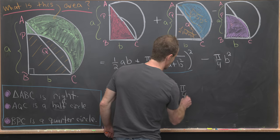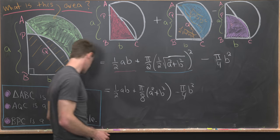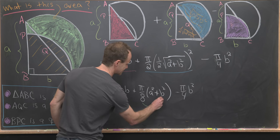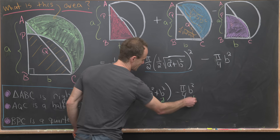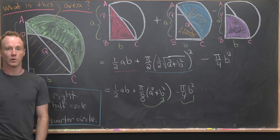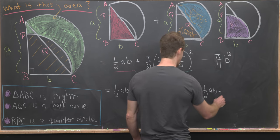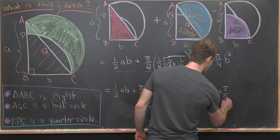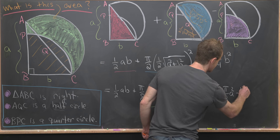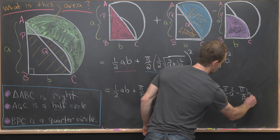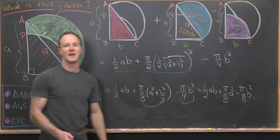And then we're going to subtract pi over four b squared. Finally we can combine this pi over eight times b squared and this pi over four times b squared into one term. We'll be left with a final answer of one half ab plus pi over eight a squared minus pi over eight times b squared, and that's a good place to stop.